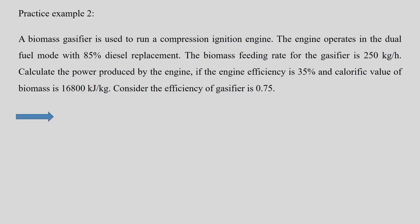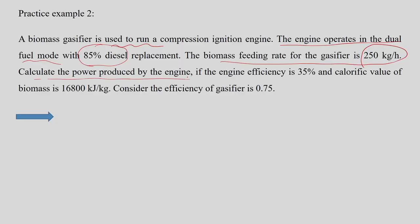A biomass gasifier is used to run a compression ignition engine again, also running on dual fuel mode. The diesel replacement is again 85%. The biomass feeding rate to the gasifier is given as 250 kilograms per hour. In the previous example, the engine output power (300 kW) was given and we found the feed rate. Now here, the biomass feeding rate is given and we are asked to calculate the power produced by the engine. The engine efficiency is slightly different, and the calorific value and gasifier efficiency are also slightly different.